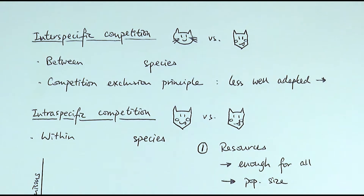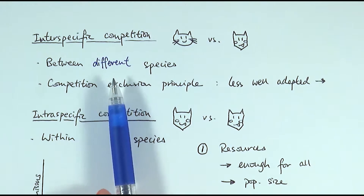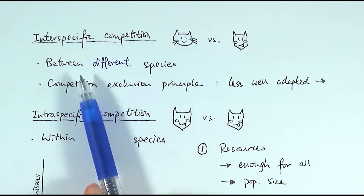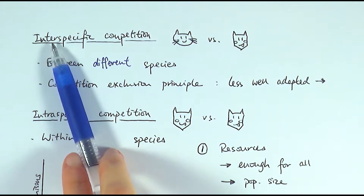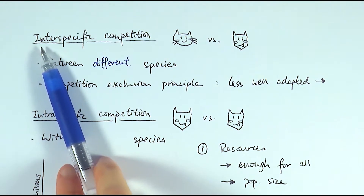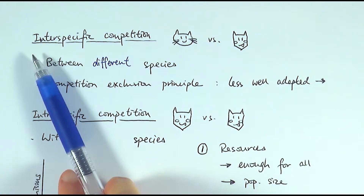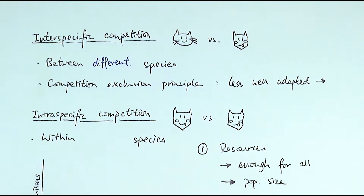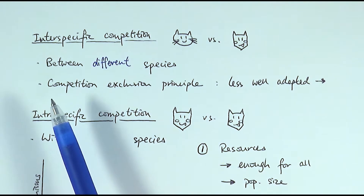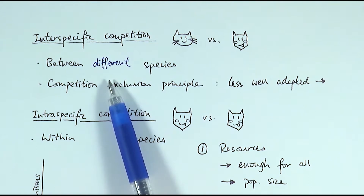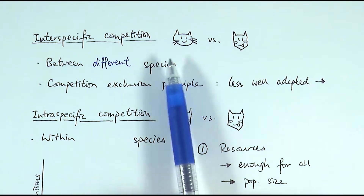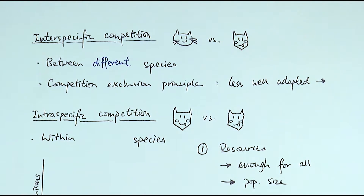First, we'll look at interspecific competition. Interspecific competition refers to competition between different species. To remember this, think about the prefix 'inter' — like international, which is competition between different countries, or inter-schools, which is competition between different schools. So interspecific competition is about different species competing for the same thing, whether that's food, habitat, or whatever it may be.